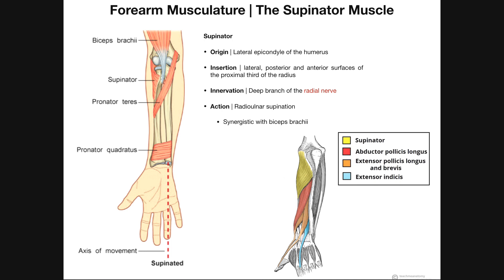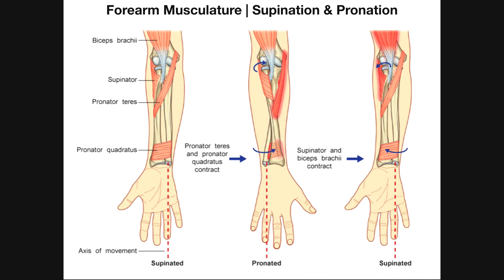I'm going to begin with the second question: what is pronation and what is supination? When you're in anatomical position — standing up straight, arms by your side, palms facing forward or ventrally — your hands are supinated. If you bend your elbows to 90 degrees with palms facing up, that's supinated. I remember this from Oliver Twist: he says 'Please, sir, I want some more' — to hold a cup of soup, your palms have to face up. So supinated means palms facing up.